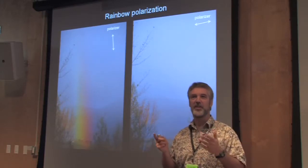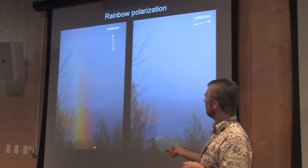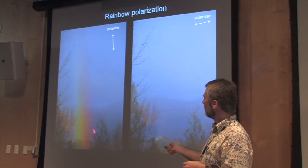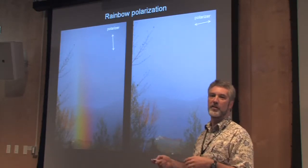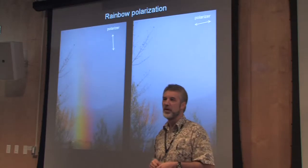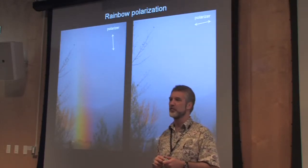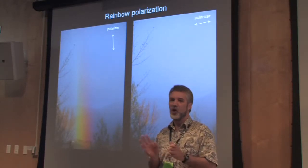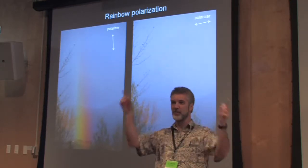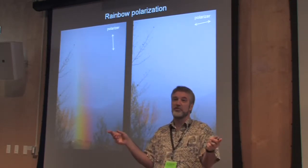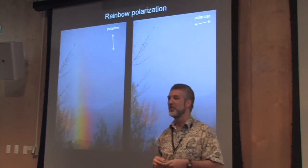What's the orientation of the polarization axis? The polarization is tangential to the bow, so it's everywhere tangential. Some photography magazines will say always use a polarizer when you're taking a picture of a rainbow. But if you're using a wide-angle lens like I did and take a picture of the whole rainbow, there's no polarizer in the world that can be tangential to all those points.